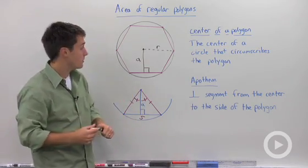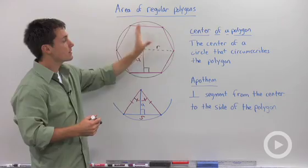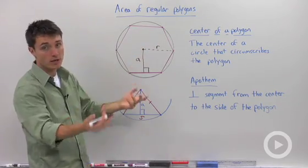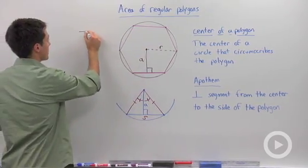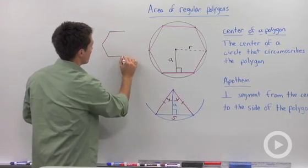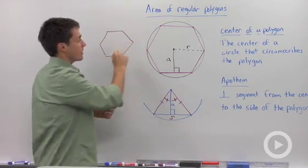Now the reason why this is important is because if we want to calculate this hexagon, so again this will apply to any regular polygon, what we're going to do is we're going to think, well, I have no idea how to calculate that area.